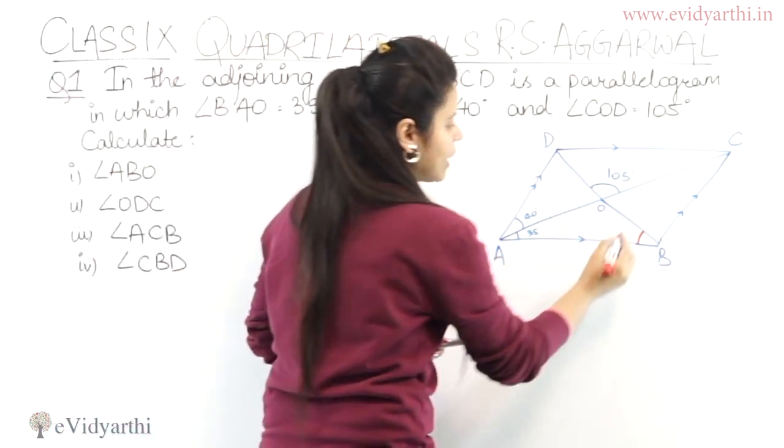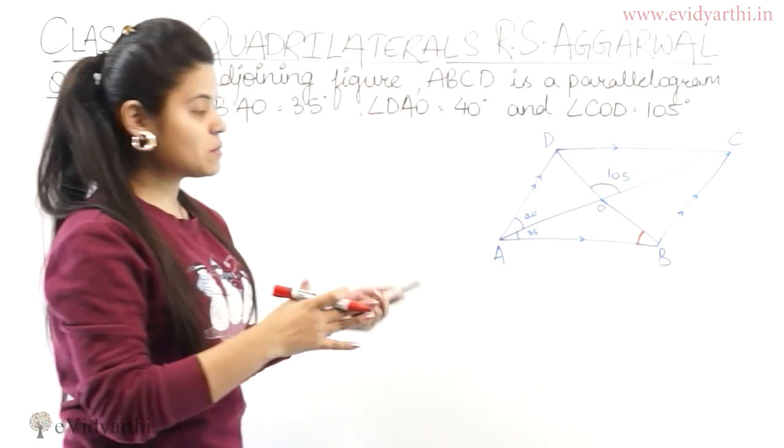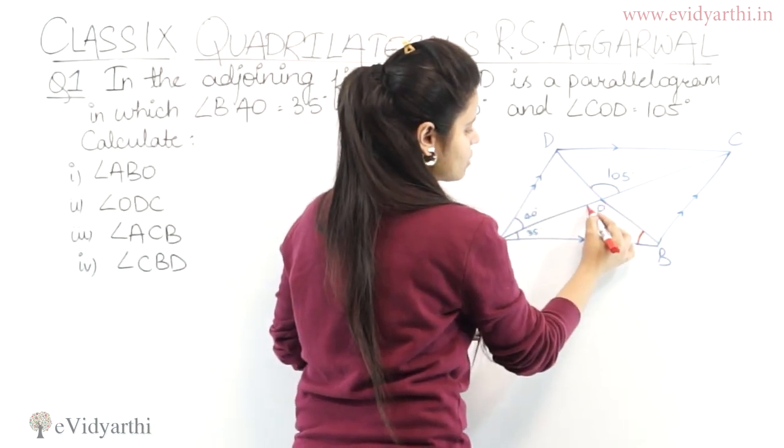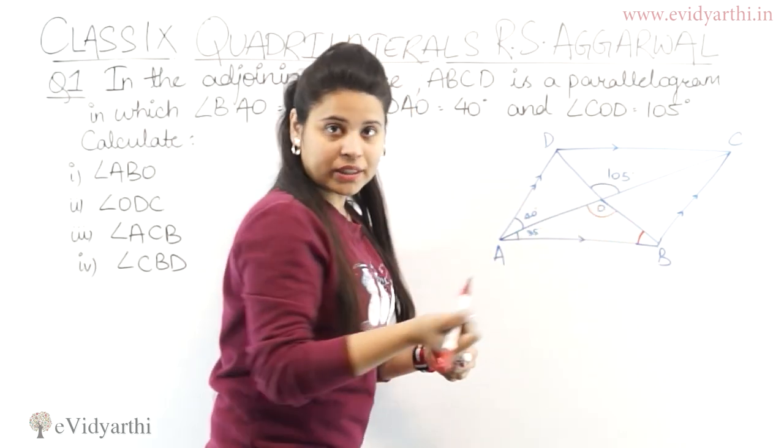So here we have to find this angle. Now from the parallelogram of parallel lines, you can clearly see this angle given. This will be equal to this angle because they are vertically opposite angles.